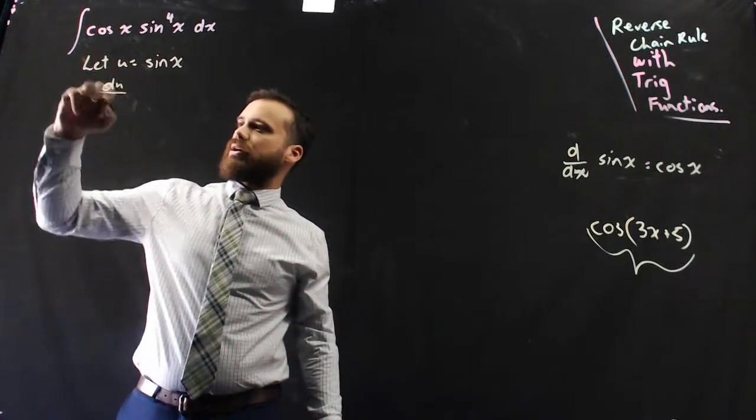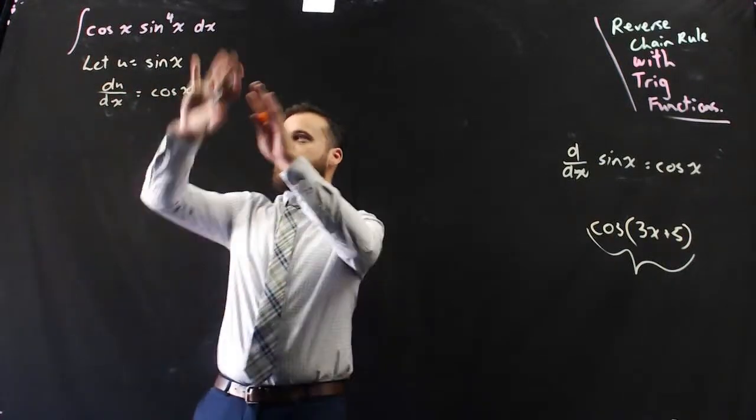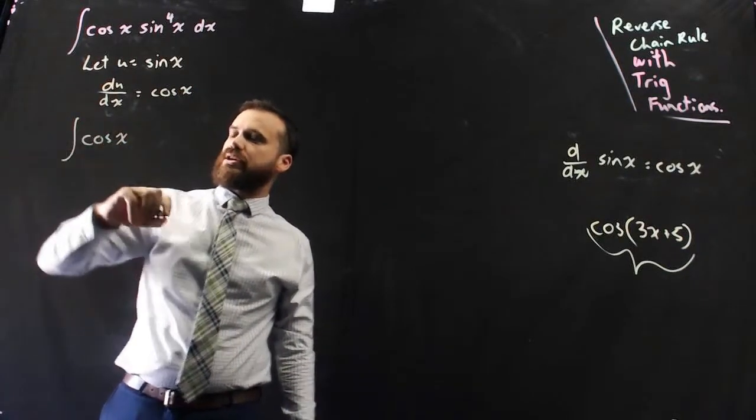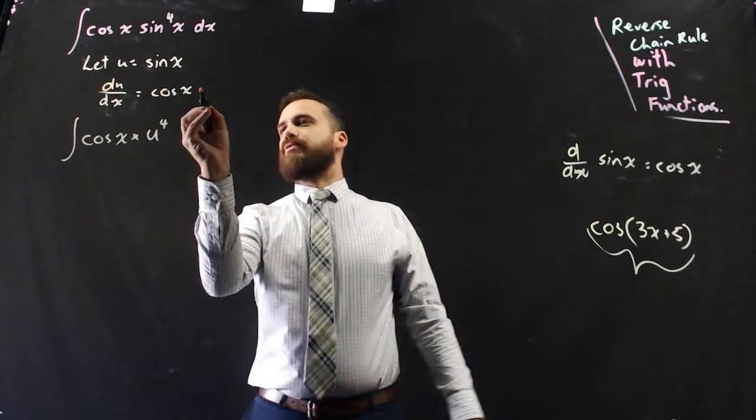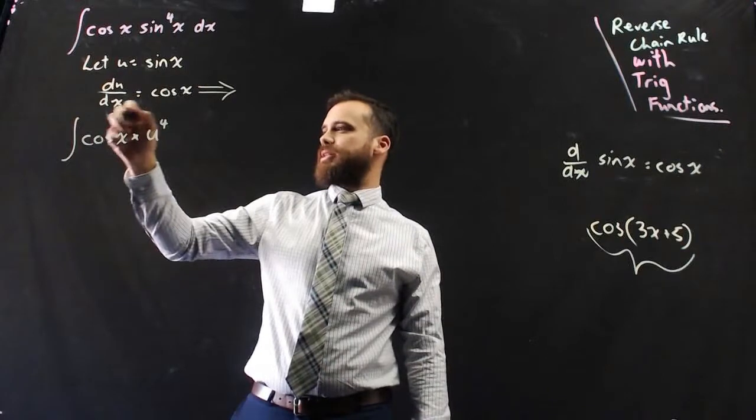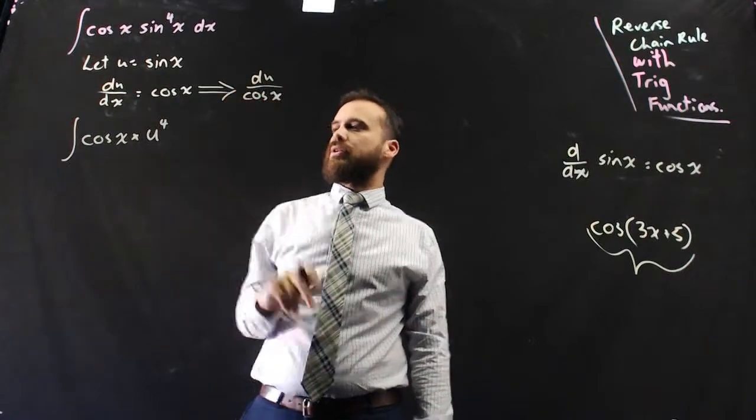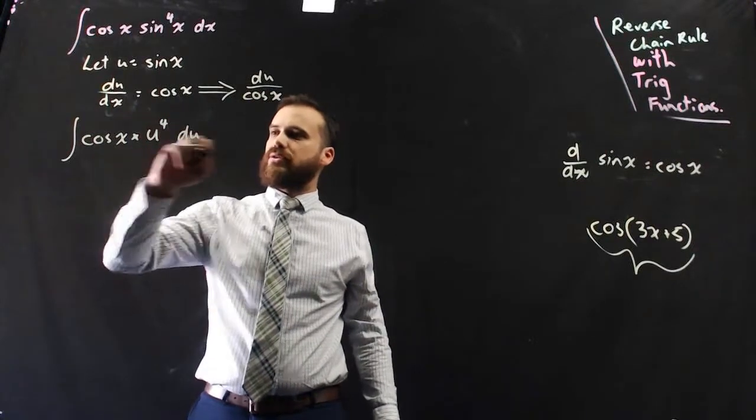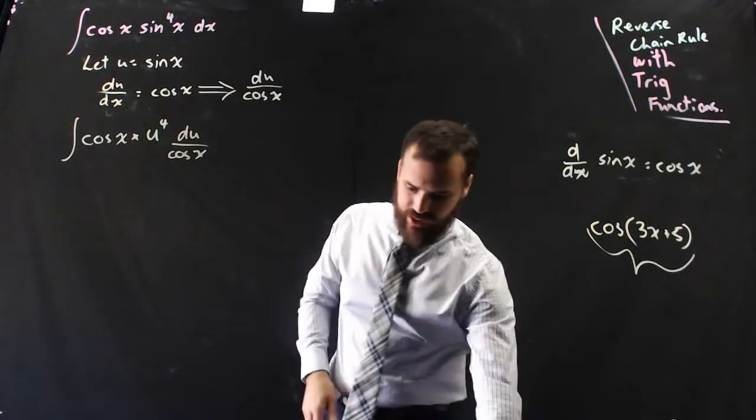Now if I do that, derivative of u with respect to x is equal to cos x. And now I can rewrite this whole thing as the integral of cos x times u to the 4, and we'll probably need to rearrange this. So that's going to be, if I make dx the subject, it's going to be du over cos x. So dx comes down here as du over cos x. Now obviously we're going to see a little bit of cancelling there.